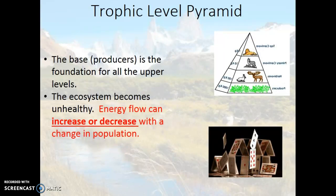The pyramid can be like a house of cards. What's going to happen if one level of the pyramid collapses? It can make the whole ecosystem unstable. Energy flow can increase or decrease with a change in population.